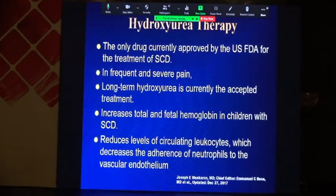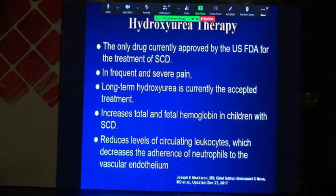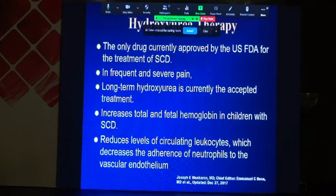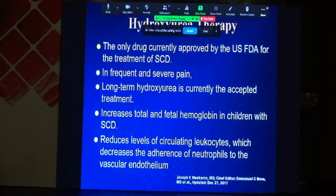Now we come to an important and much-debated issue in Egypt: hydroxyurea therapy. Published in 2017 and discussed since the 1990s, hydroxyurea is the only drug currently approved by the US FDA for treatment of sickle cell disease. It reduces frequent and severe pain, increases total and fetal hemoglobin, reduces the level of circulating neutrophils, and decreases adherence of neutrophils to the vascular endothelium — thereby decreasing vessel obstruction by sickle cells.